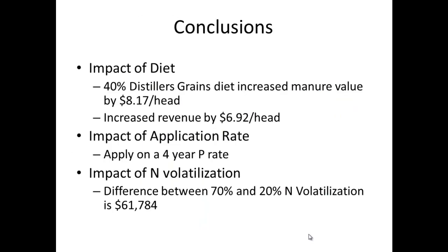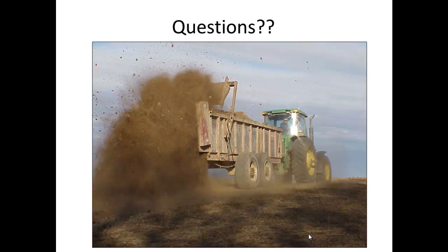In summary: diet does impact manure quality and value — feeding a 40% distillers grains diet increased manure value by about $8.17 per animal, with increased costs but a net revenue increase of almost $7 per animal. Regarding application rate, spreading on a four-year phosphorus basis is ideal both for nutrients applied to the land and for economics. On nitrogen volatilization, the difference between 70% and 20% volatilization is almost $62,000. This tool is designed to help feedlot producers understand the economic impact of operational changes before implementing them, serving as a true decision aid tool.